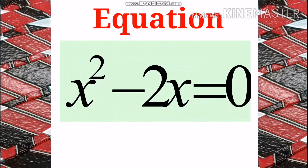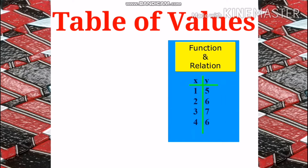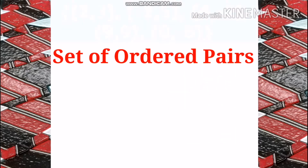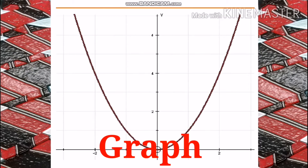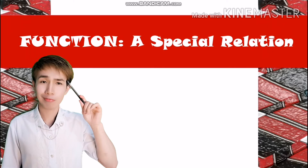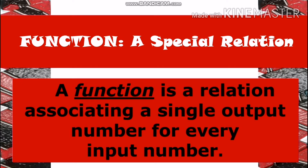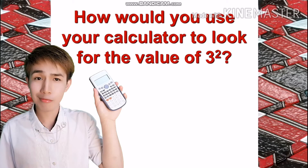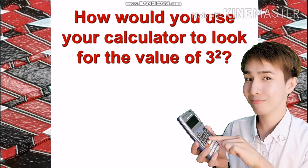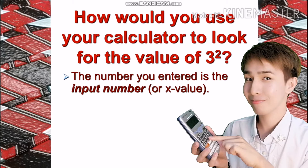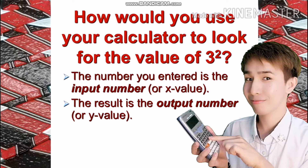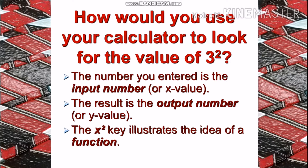Just like any relationship which could be shown through letters, flowers, and chocolates, a relation could be presented through the following: mapping, equation, table of values, set of ordered pairs, and graph. A function is the relation associating a single output number for every input number. To illustrate the idea of a function, how would you use your calculator to look for the value of 3 squared? The number you entered is the input number or x value — that is 3 — and the result is the output number or y value, which is 9. The idea of pressing x squared on our calculator illustrates a function.